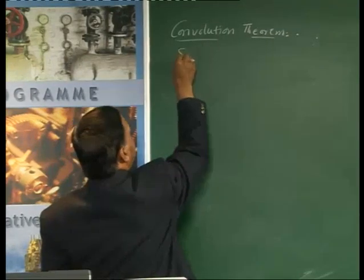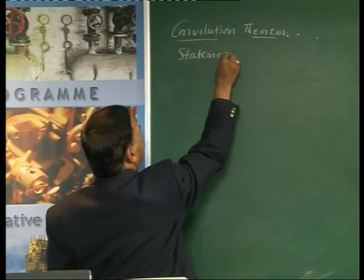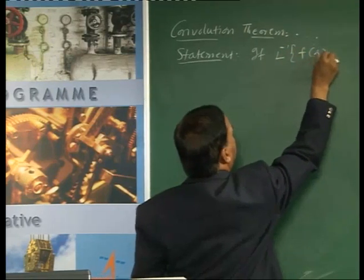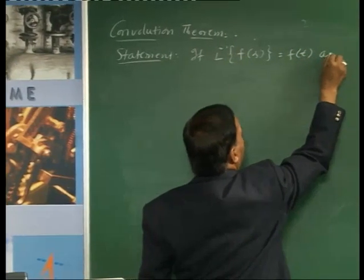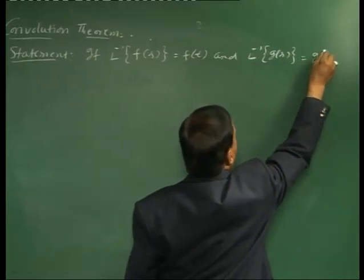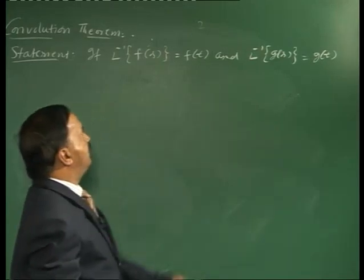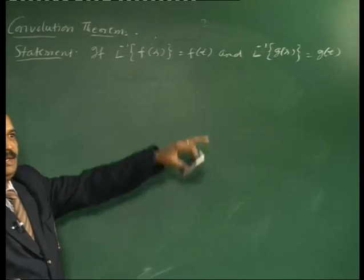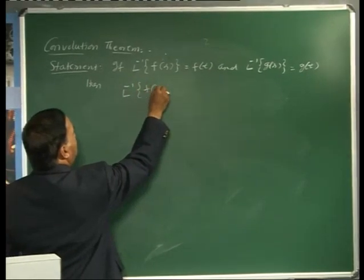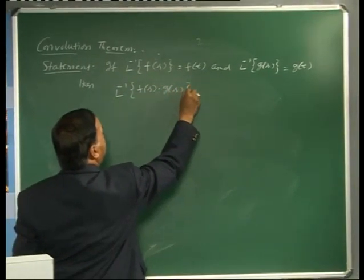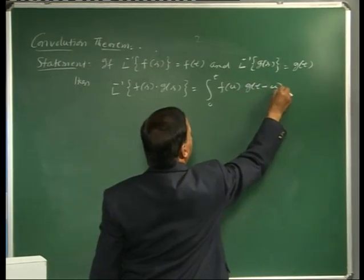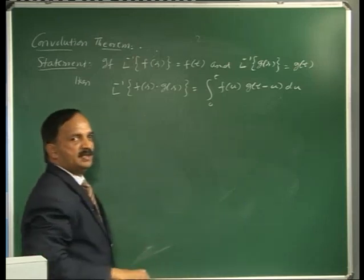Convolution Theorem statement: if L inverse of F(s) equals f(t), and L inverse of G(s) equals g(t), then L inverse of F(s) into G(s) equals the integral from 0 to t of f(u) into g(t minus u) du. This is the statement of the convolution theorem.